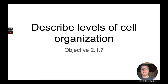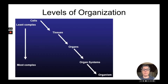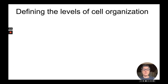This video covers the IGCSE biology objective 2.1.7 on the 2025 CAI syllabus to describe levels of cell organization. Cell organization starts from the least complex level and goes to the most complex level. From specialized cells, we move on to tissues, then to organs, to organ systems, which then makes up the organism. Let's define the levels of cell organization.